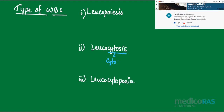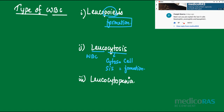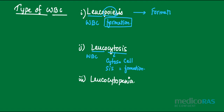Leukopoiesis — here, 'leuko' refers to WBC, and 'cyto' means cell. The suffix '-cis' or '-sis' indicates formation. We also have the word 'poiesis,' which stands for something that is newly formed — original formation. So leukopoiesis means the formation of WBC in a natural way.